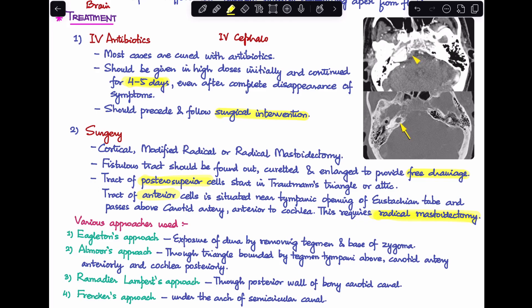There are multiple different approaches that you can take to reach the petrous apex. Some of them are Eagleton's approach, where you expose the dura by removing tegmen and the base of zygoma. Almor's approach, where you approach through a triangle which is bounded by the tegmen above, carotid artery anteriorly, and cochlea posteriorly. Ramadier-Lempert's approach, which is done through the posterior wall of the bony carotid canal, and last of all the Frenckner's approach, which is done under the arch of the semicircular canal. So this is all about petrositis. If you have any questions, please note them down in the comment section and I'll get back to you.